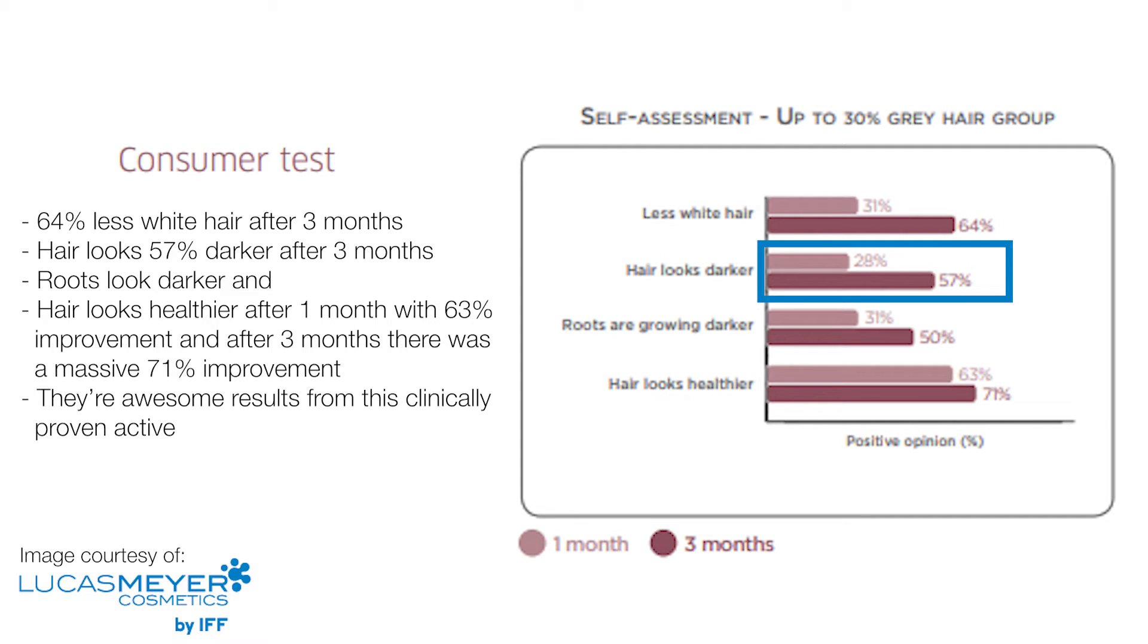The hair looks darker so after three months there was 57% improvement which again is really good results. Roots are growing darker. One month there was 31% improvement and after three months there was 50% and the hair looks healthier. So after one month there was 63% improvement there which is fantastic and after three months there was a massive 71% improvement. So they're really really awesome results from this clinically proven active.